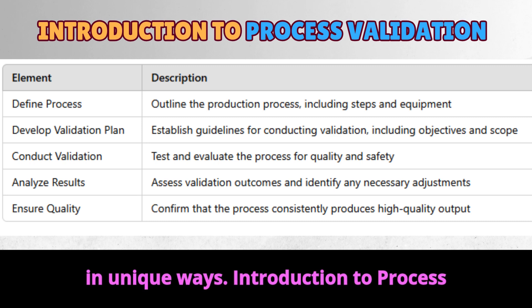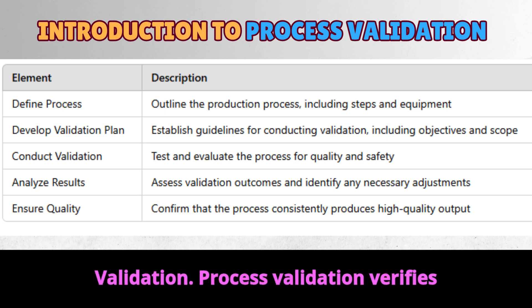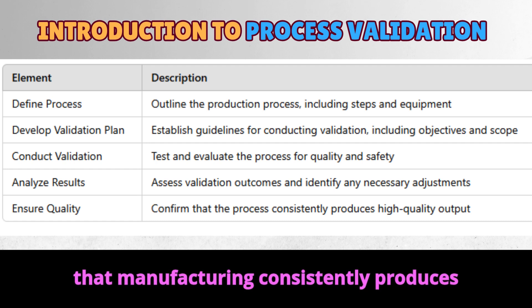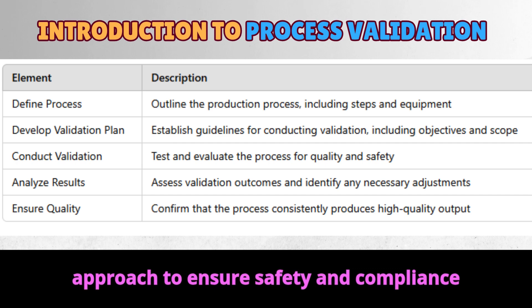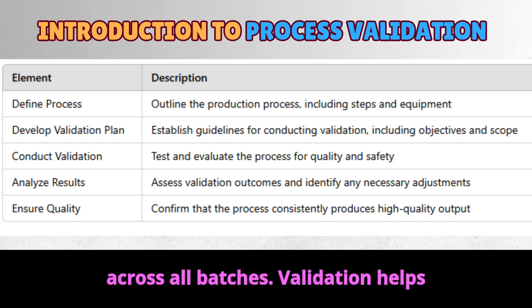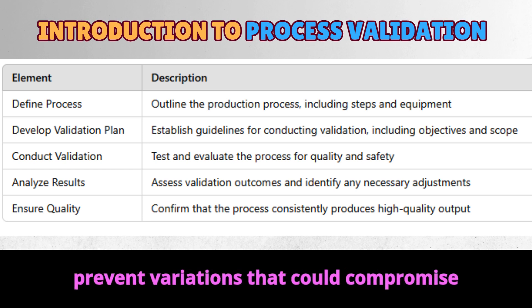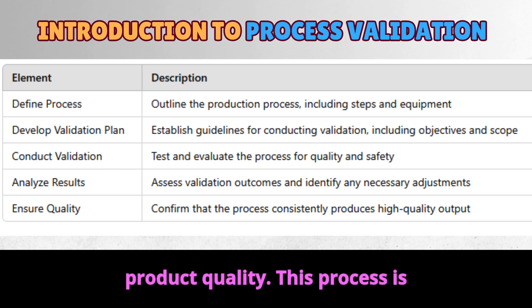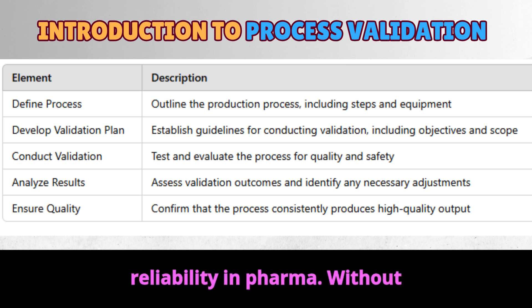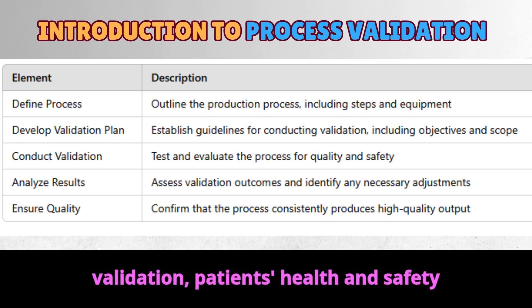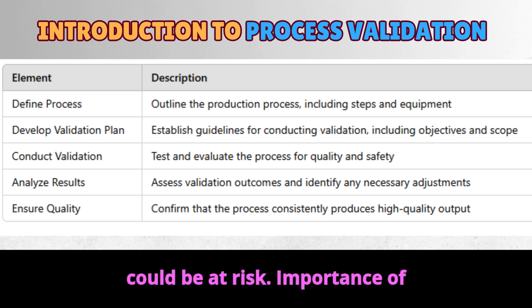Introduction to process validation. Process validation verifies that manufacturing consistently produces quality products. It's a structured approach to ensure safety and compliance across all batches. Validation helps prevent variations that could compromise product quality. This process is essential for maintaining safety and reliability in pharma. Without validation, patients' health and safety could be at risk.